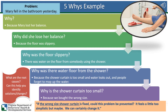Again, we will ask: if this solution is implemented — if the wrong size shower curtain is fixed — could this problem be prevented? This feels a little too simplistic, but maybe it could help address the problem. We can certainly change it. However, because this feels too simplistic, we might want to also consider a more in-depth root cause analysis. And that takes us to our why tree in the next section.